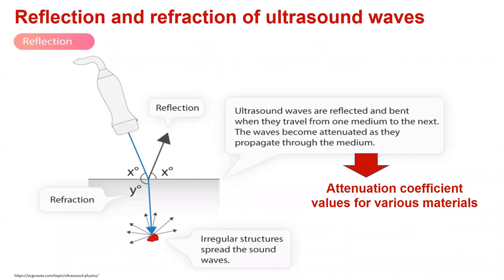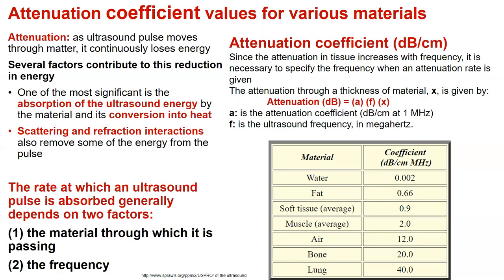Ultrasound waves are reflected and bent when they travel from one medium to the next. The waves become attenuated as they propagate through the medium, and the differences between the attenuation of different tissue parts is the attenuation coefficient. Several factors contribute to this reduction in energy: one of the most significant is absorption of ultrasound energy as conversion into heat, and the others are scattering and refraction interactions.